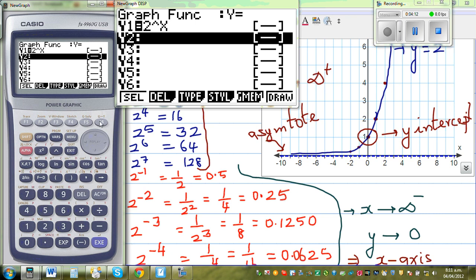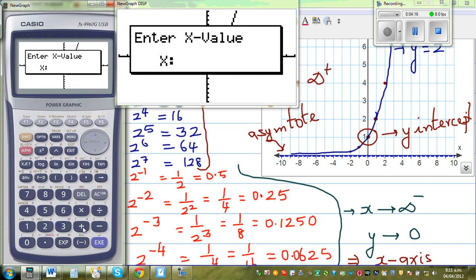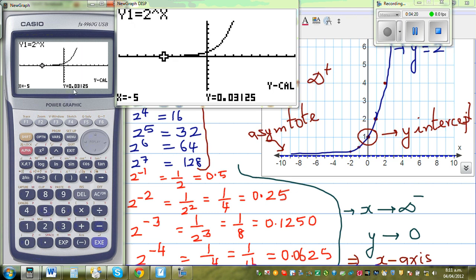So let me draw this again. gsol and take say ycalc when x is negative five. This is 0.03125. In other words, when x is approaching negative values, your y will be approaching zero. This will never become zero. But this will be approaching zero. Or your x-axis will become the asymptote.